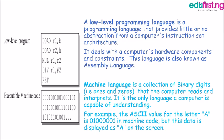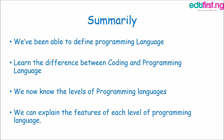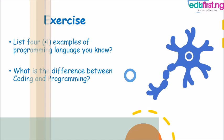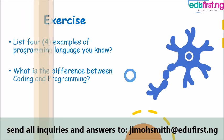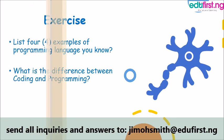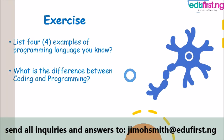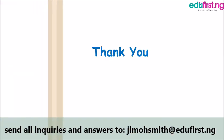At this point, I believe we are able to understand the definition of programming language, the difference between programming language and coding, as well as the levels of programming language, and we can explain each of these levels. If that has been established, let's try it out: list four examples of programming languages that you know, and also try to differentiate between coding and programming language. Thank you very much, and bye for now.